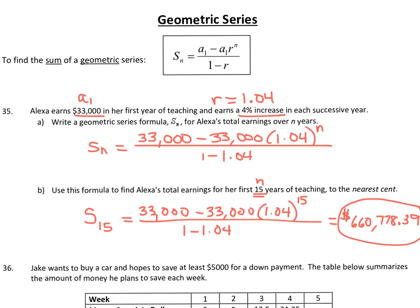In part B, they wanted you to use this formula to find her total earnings — the sum of her earnings over the first 15 years. So N, the number of years we're looking at, is 15. All you had to do is replace both N's with 15, then plug this into your calculator. To the nearest cent, you get $660,778.39.